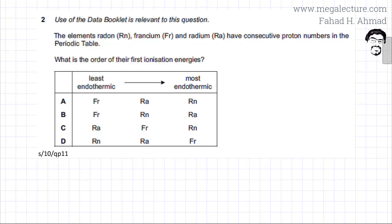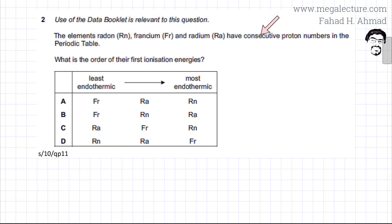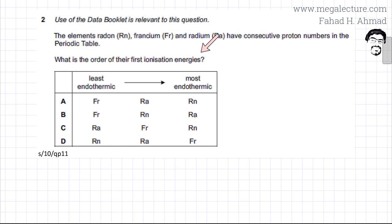The following past paper question reads that the use of a data booklet is relevant. The elements radon, francium, and radium have consecutive proton numbers in the periodic table. What is the order of their first ionization energies, and we need to figure out which one is least endothermic and which one is most endothermic.